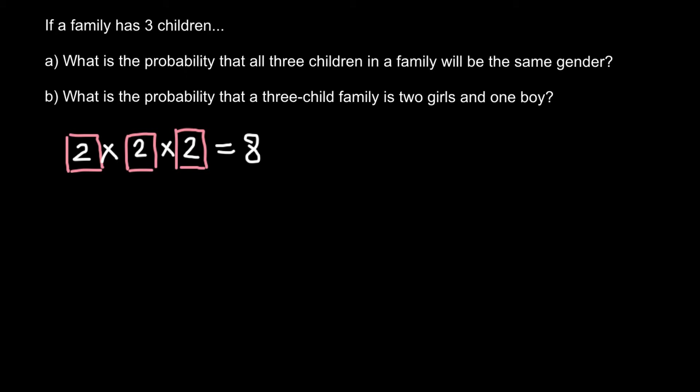So total number of combinations is eight. One of these combinations is when the first child is a girl, the second child is a girl, and the third child is a girl — that is one eighth. Another combination is when the first child is a boy, the second child is a boy, and the third child is also a boy — that also represents one eighth.